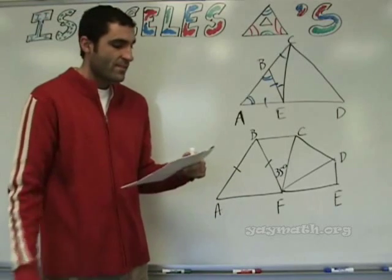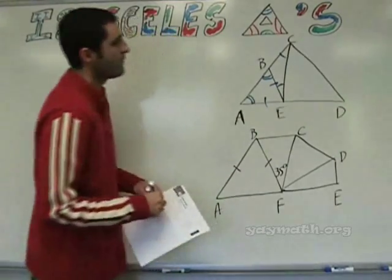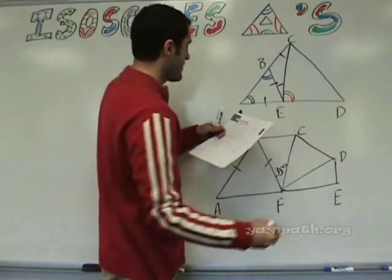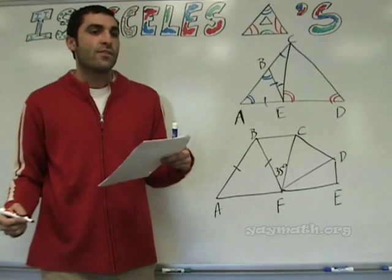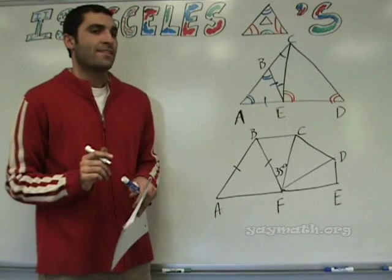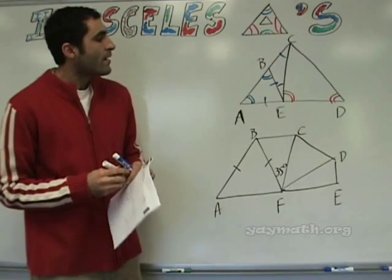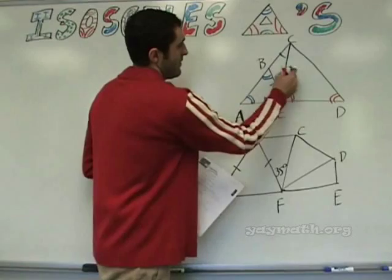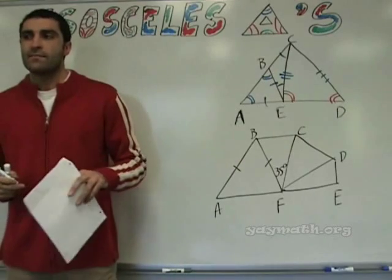Can you read number four for us, please? If angle CED is congruent to angle CDE, name two congruent segments. So if this angle CED is the same as angle CDE, which two segments would be the same? Segment EC and segment CD. Good job. Questions on that? All right, last image is here.